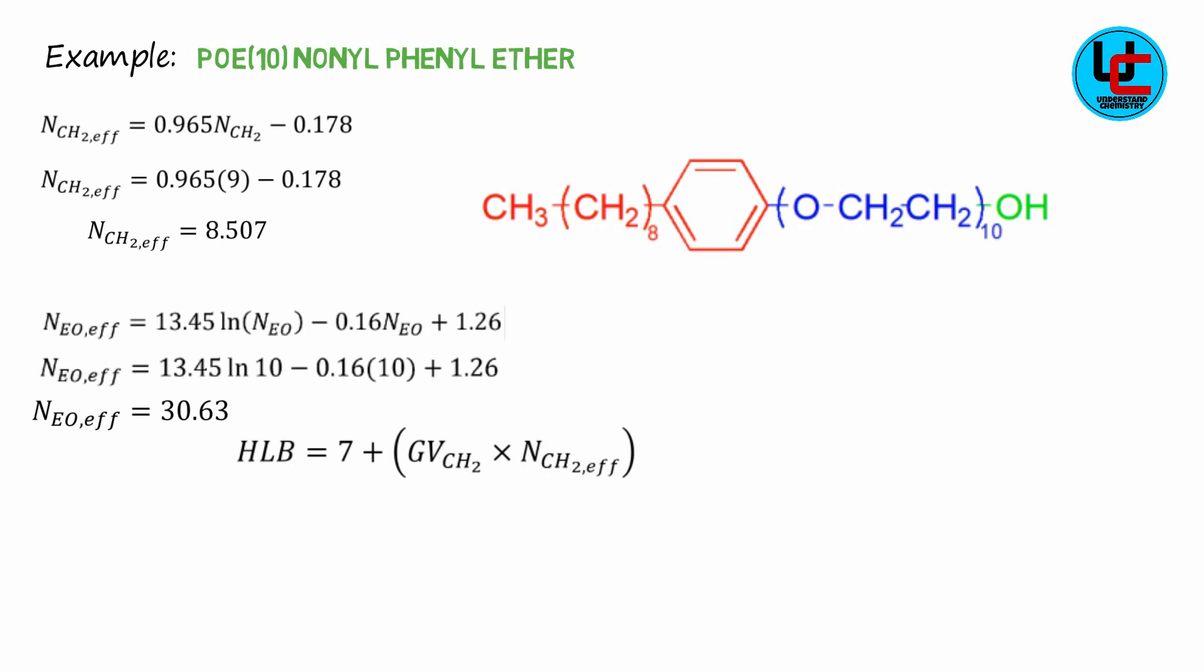Now to calculate HLB, we use the formula HLB is equal to 7 plus group value of methylene group into number of effective methylene groups, plus group values of ethylene oxide into number of effective ethylene oxide units, plus group value of hydroxyl group and group value of phenyl groups.